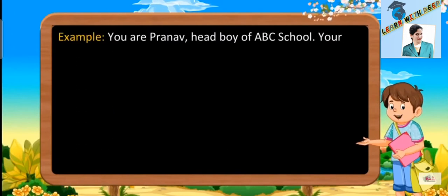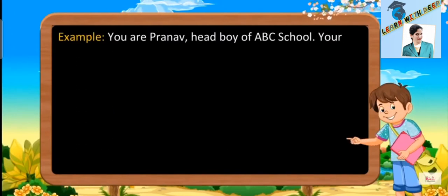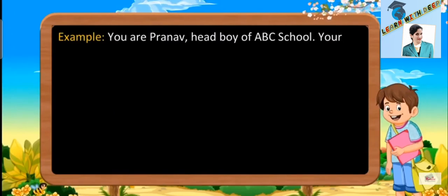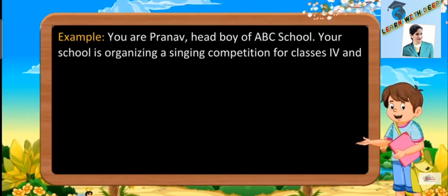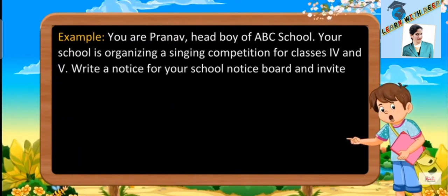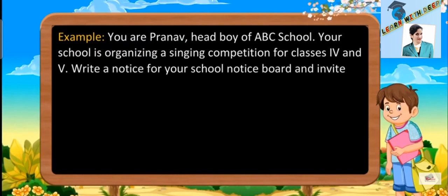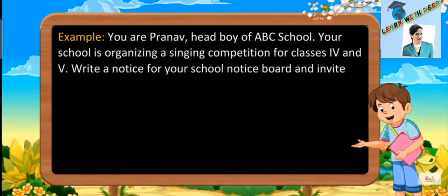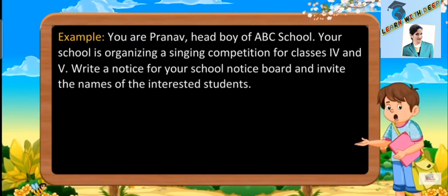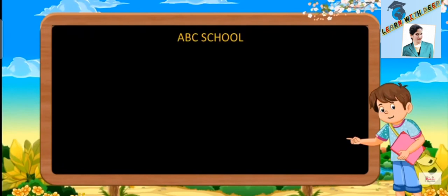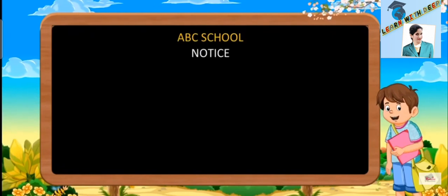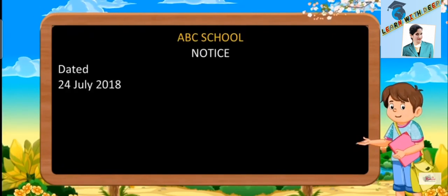Example: You are Pranav, head boy of ABC school. Your school is organizing a singing competition for classes 4th and 5th. Write a notice for your school notice board and invite the names of the interested students. ABC school. Notice. Dated: 24th July 2018.